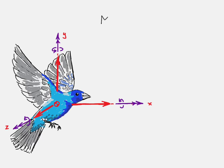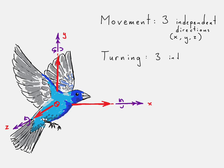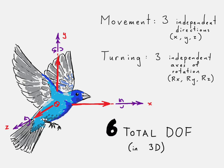So drawing the bird again, we know that there are three independent directions that this bird can move in. No matter where that bird moves, it can be written as a superposition of these three directions. It could also rotate along, or probably rotate about three independent axes. And so that gives us a total of six total degrees of freedom for a three-dimensional problem.